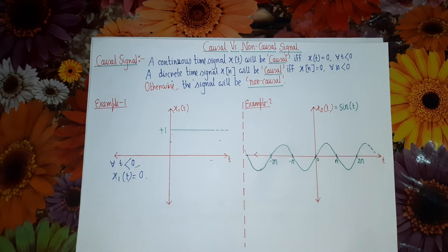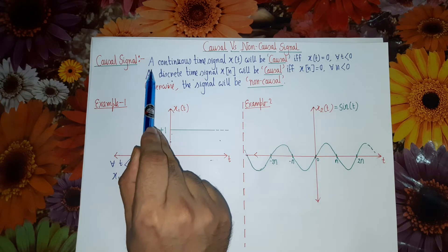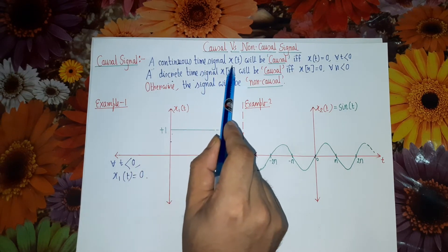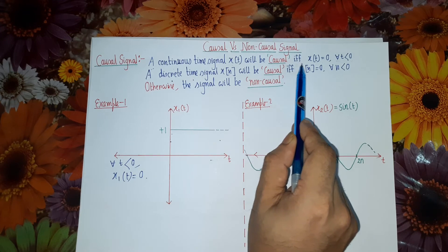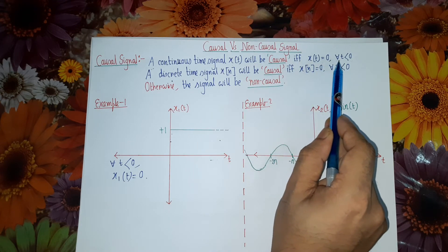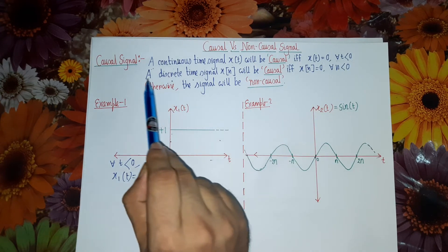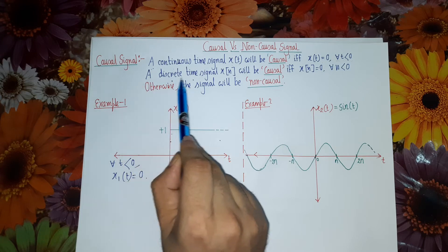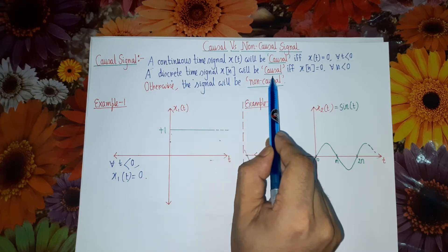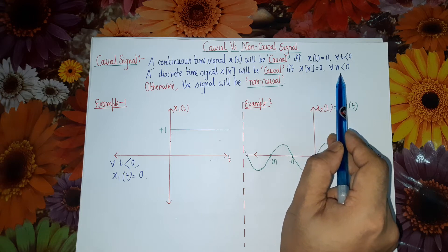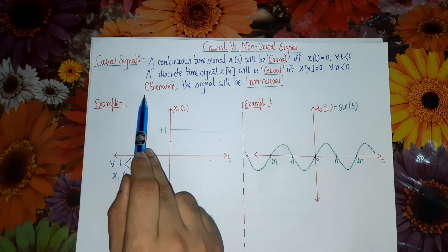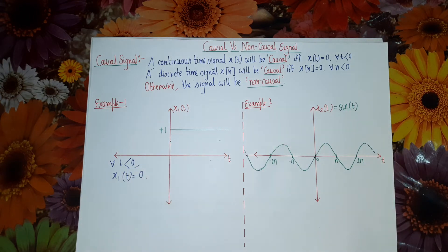The definition says that a continuous time signal x(t) will be a causal signal if and only if x(t) is equal to 0 for all t less than 0. And a discrete time signal x(n) will be causal if and only if x(n) is equal to 0 for all n less than 0; otherwise the signal will be a non-causal signal.